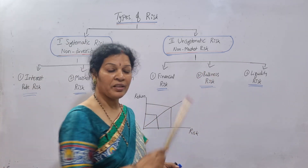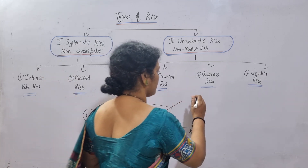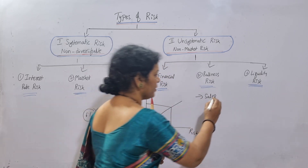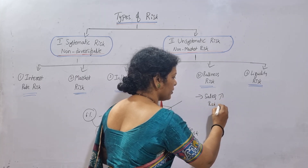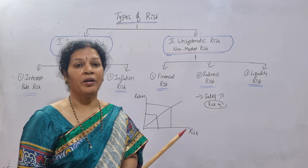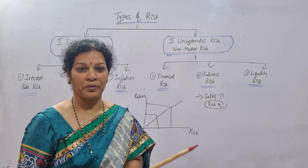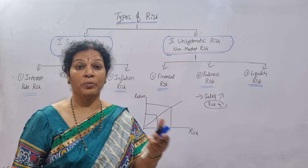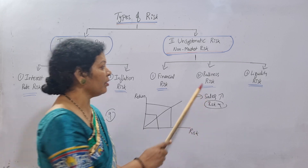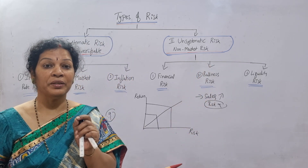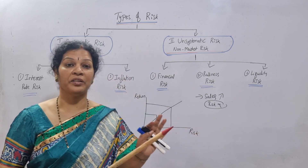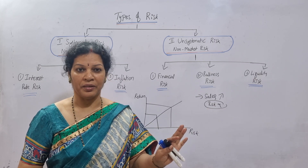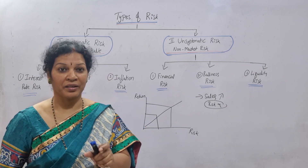Next is business risk. Business activities like sales — if sales are increasing, there is no risk. But when sales are decreasing, risk will be more. There are many other factors: technological changes, market prices increasing or decreasing, inflation — all these come together as business risk. The company has to be very careful in handling each concept — whether it's sales, advertising, storing, or marketing. That is business risk.